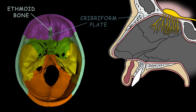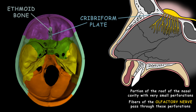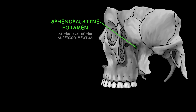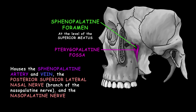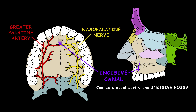The ethmoid bone features the cribriform plate, a portion of the roof of the nasal cavity with very small perforations. Fibers of the olfactory nerve pass through these perforations. The sphenopalatine foramen is found at the level of the superior meatus, connecting the nasal cavity and the pterygopalatine fossa. The sphenopalatine artery, nasopalatine, and superior nasal nerves transmit through it. The incisive canal connects the nasal cavity and incisive fossa of the oral cavity, allowing the nasopalatine nerve and greater palatine artery to pass through it.